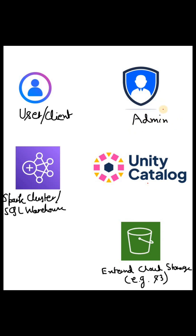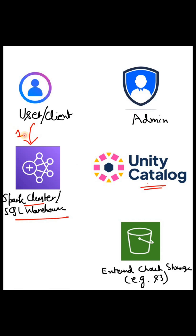We also have the admin team, which generally takes care of initial setup or granting access. Whenever a user or client tries to query some data — maybe a SELECT query on some table on a Spark cluster or SQL warehouse — this cluster is not aware whether the user is authorized to view the data or execute certain transformations. That information is held by Unity Catalog, so as a first step, the Spark cluster reaches out to Unity Catalog to check whether the user is authorized or not.